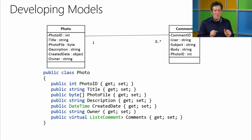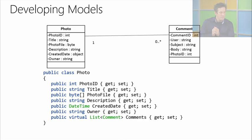Looking at this class, you've got a virtual keyword so models can link to each other — one model can reference another. You've got a byte array, a DateTime, so it's just a class but it can hold complex types and all the things a class can do.